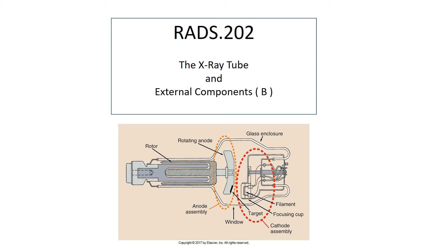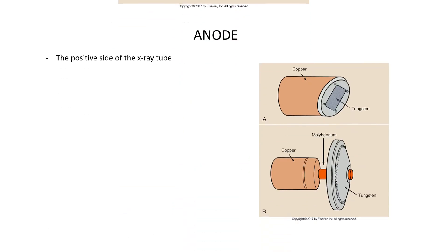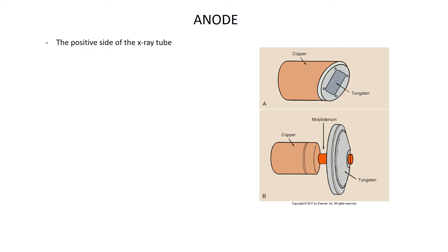Hello everyone. Today we're going to continue our discussion of the x-ray tube and external components. In the last lecture we talked about the cathode; now we're going to move our attention to the other side of the tube, the anode. We want to keep in mind that the cathode is negative and the anode is the positive side of the x-ray tube.